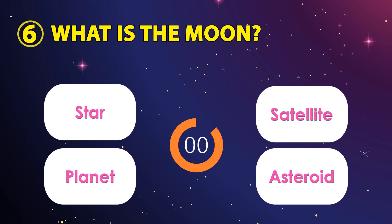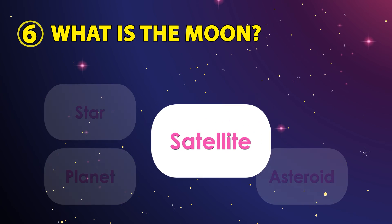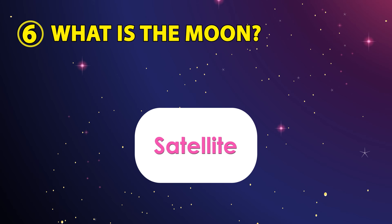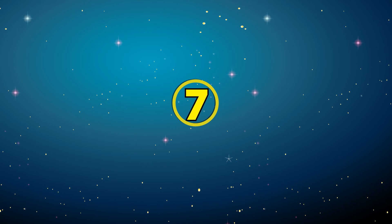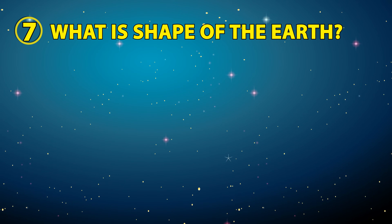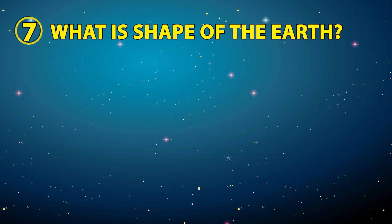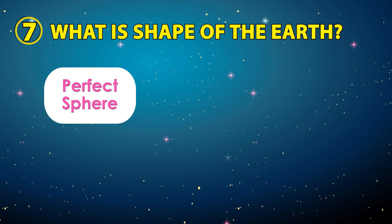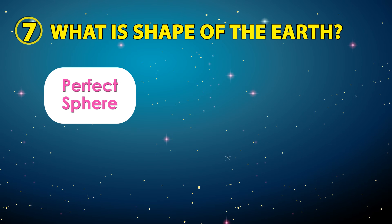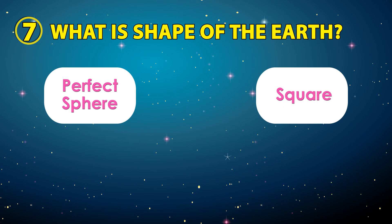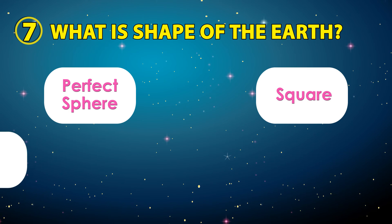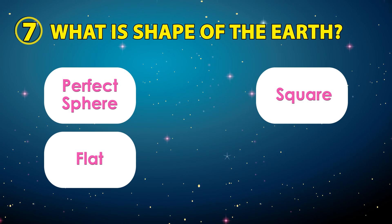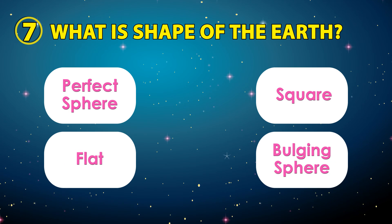The correct answer is satellite. Number seven: what is the shape of the Earth? The options are perfect square, square, flat, or bulging sphere.